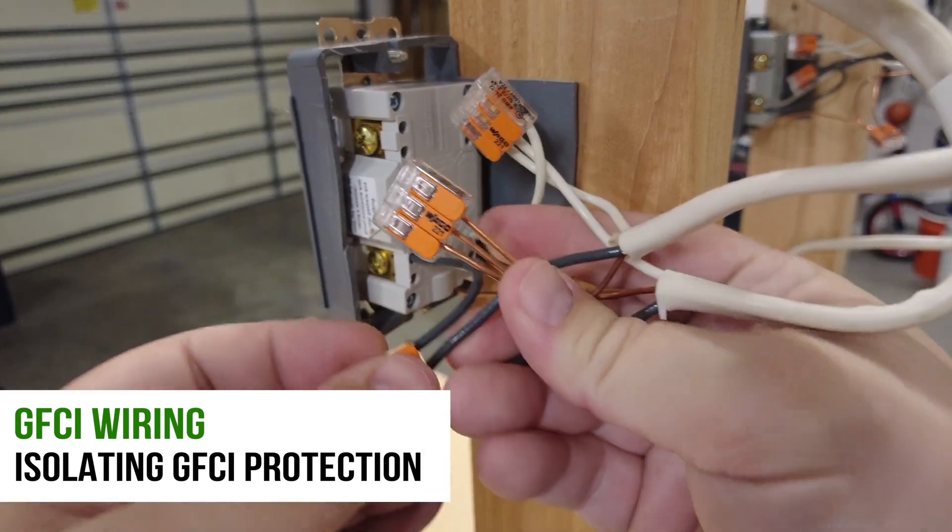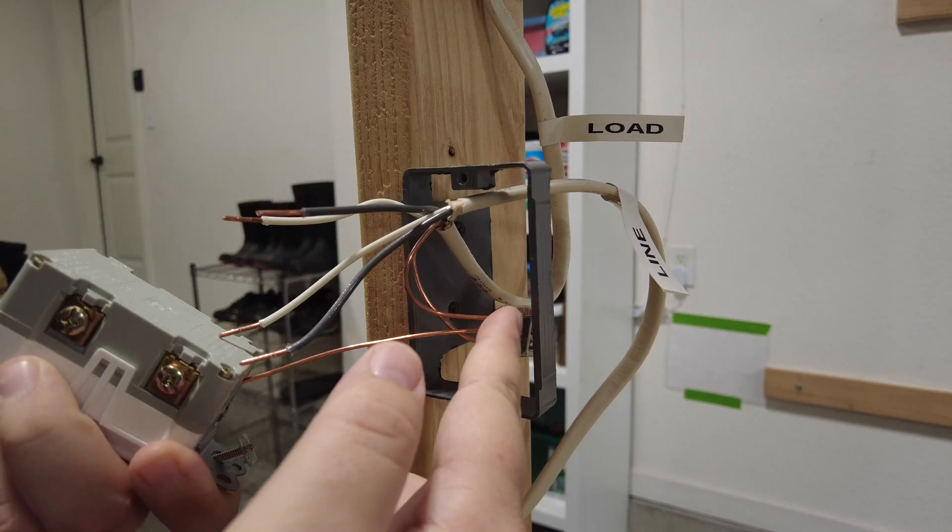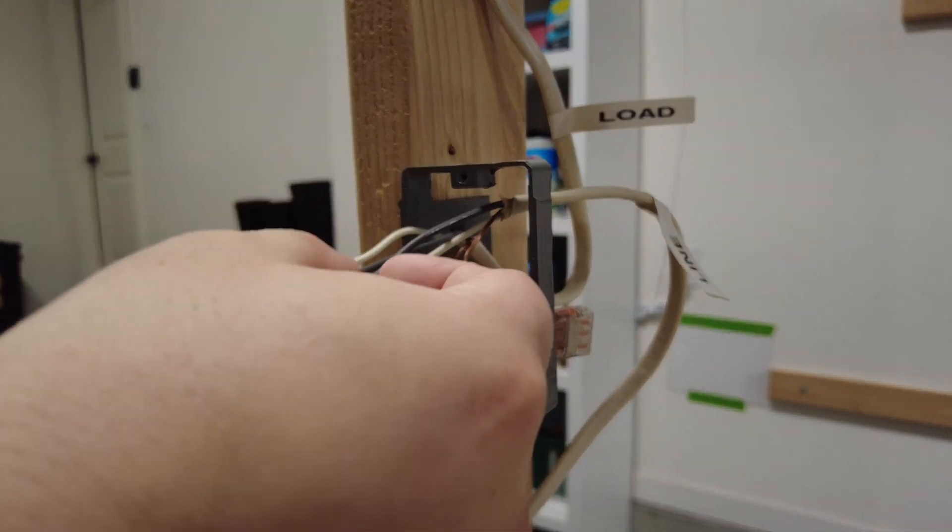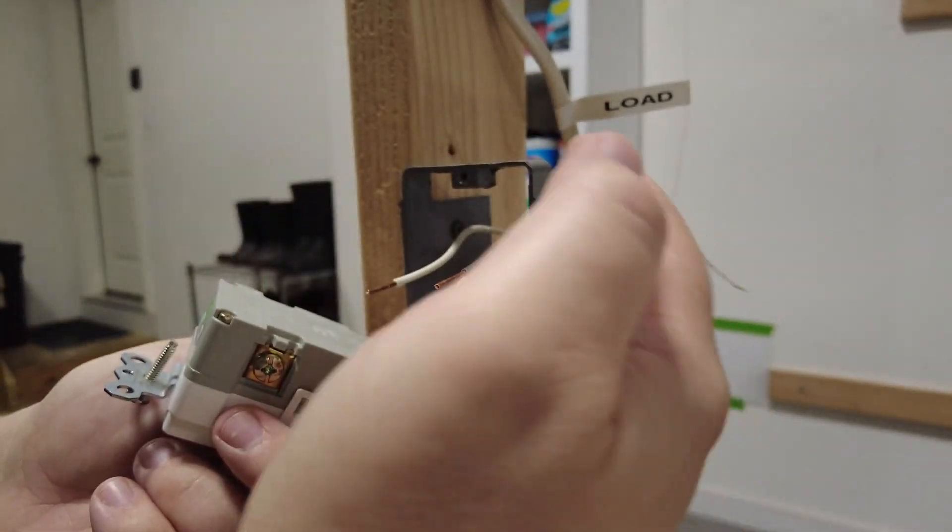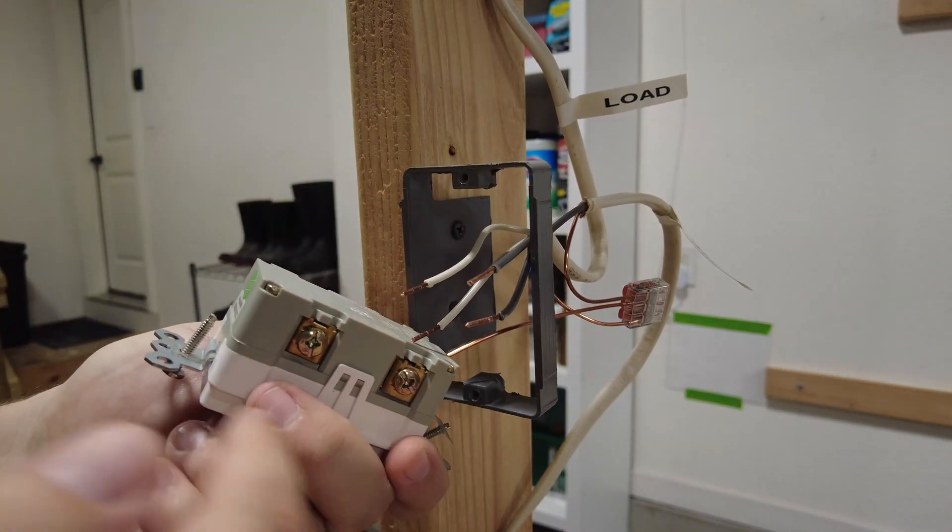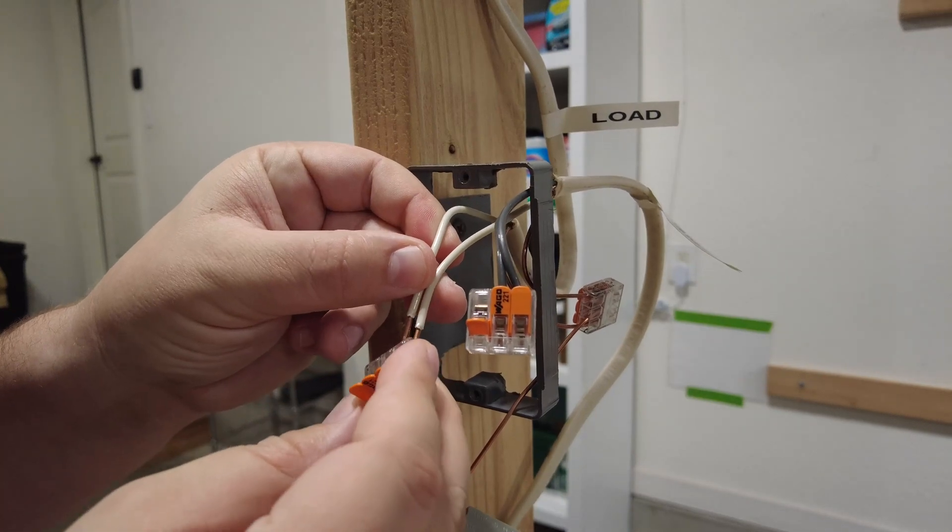What if you have a GFCI receptacle, but you don't want it to protect anything else on the circuit? Well, you can wire it up with a pigtail. Now we already have a pigtail connection with our ground wire. The only thing we're going to do differently now is create a pigtail connection for our hot wires and for our neutral wires. This is going to let the electricity flow through the wires directly to the next receptacle without having to go through this receptacle first. To make this simple again, I'm just using some WAGO lever connectors.